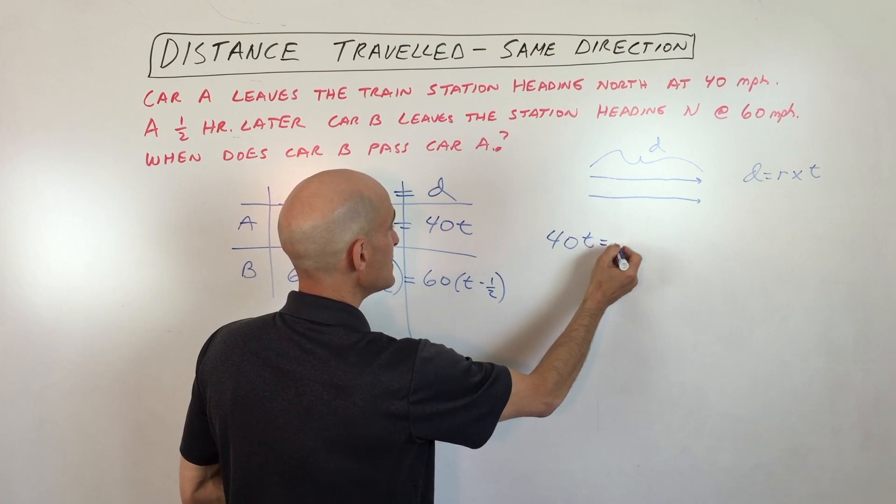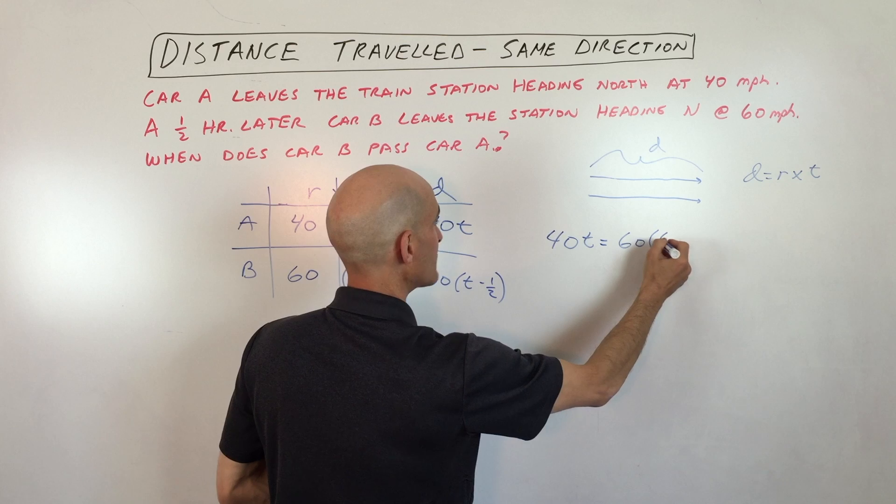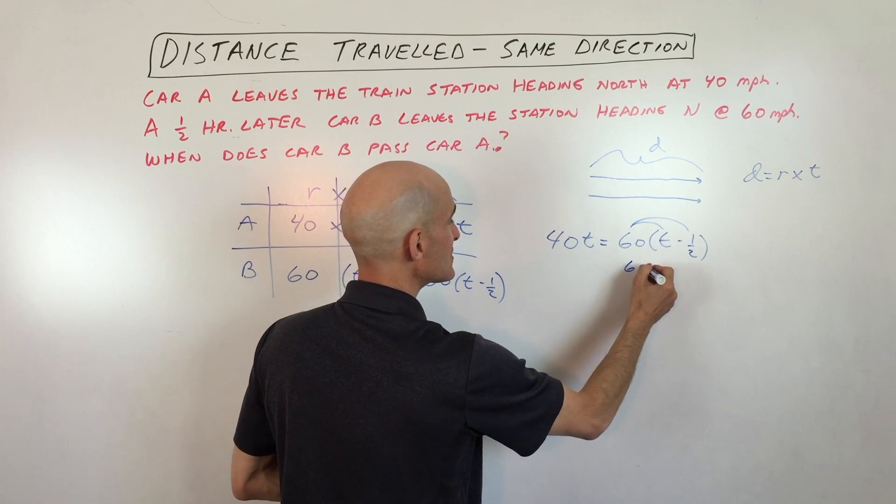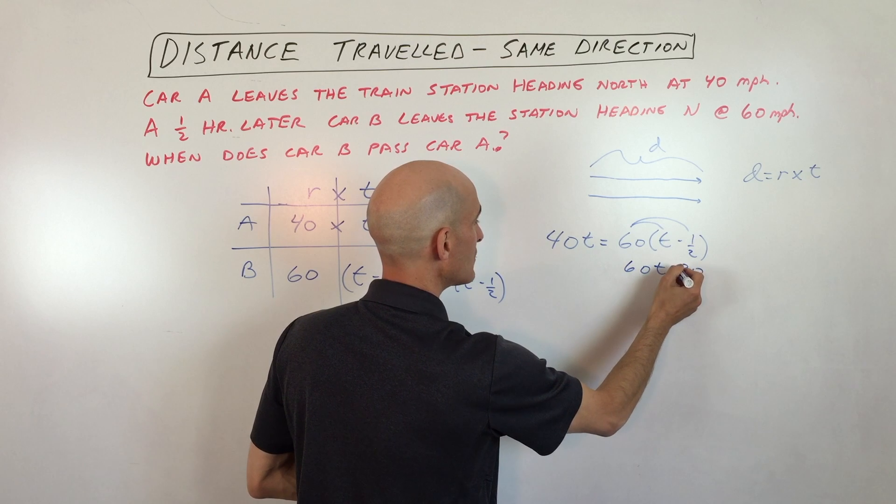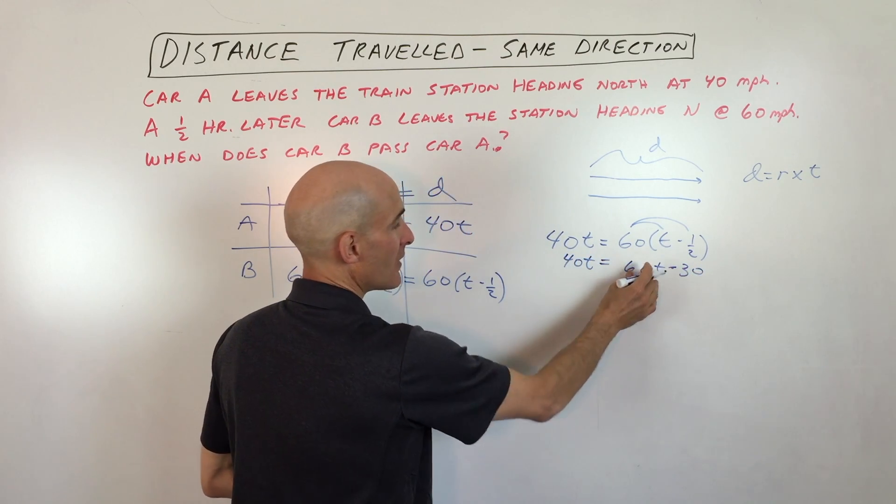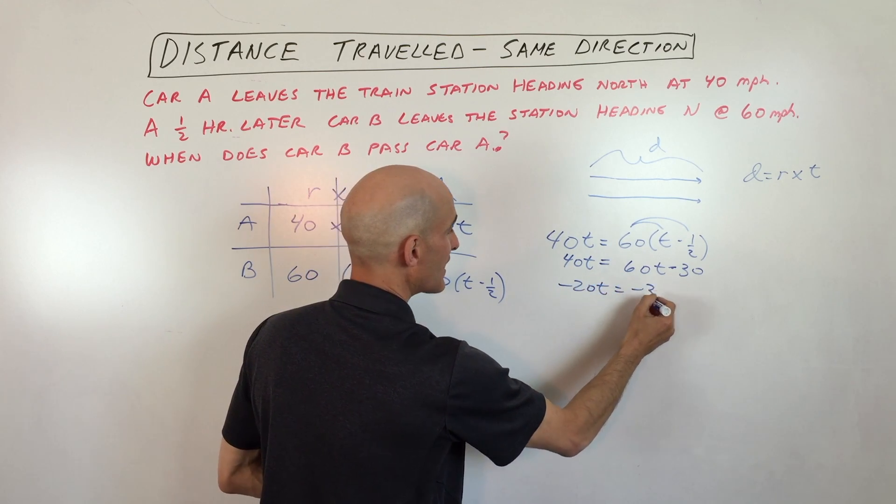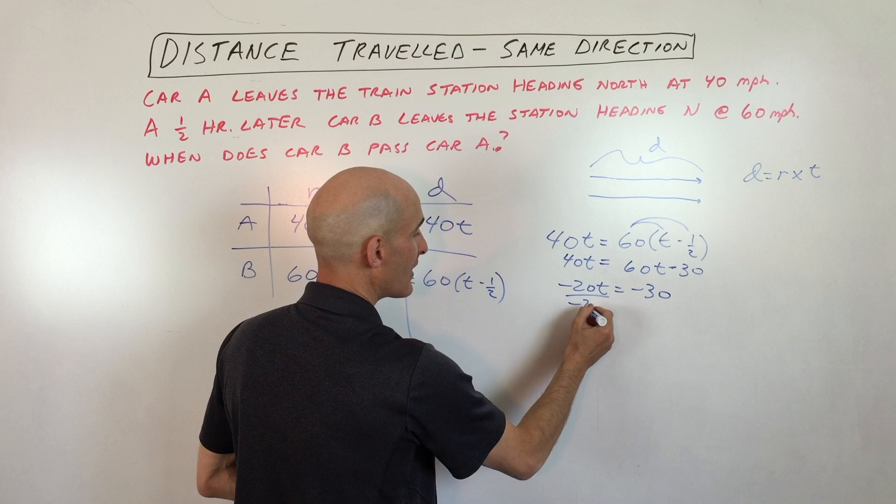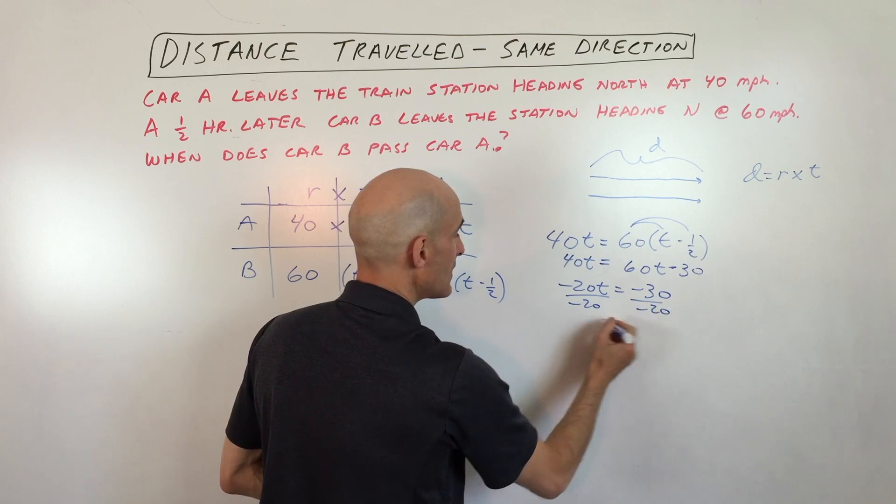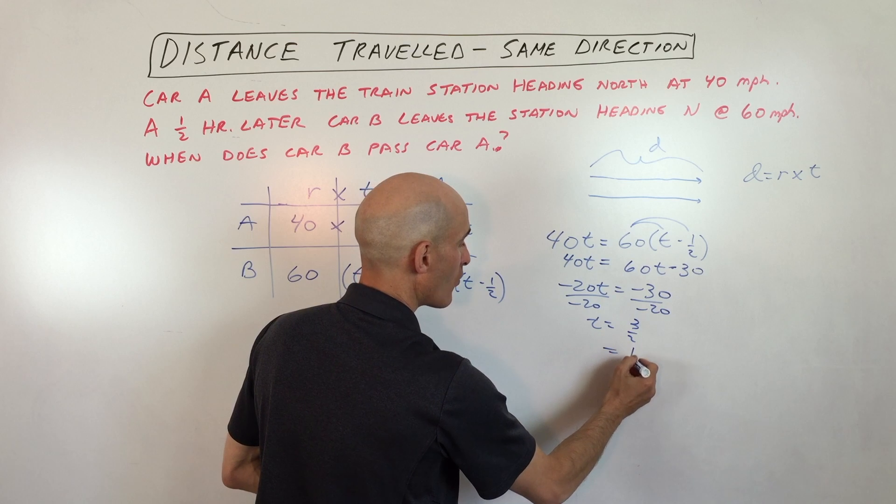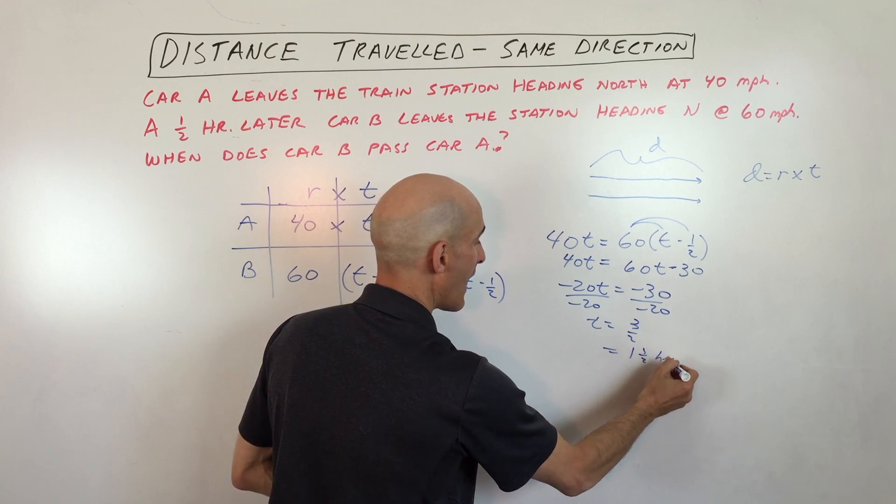So 40T equals 60 times T minus one half. I'm going to distribute the 60. So that gives you 60T minus 30 equals 40T. If I subtract the 60T, that gives me negative 20T equals negative 30. And if I divide by negative 20, T gives us three halves, which is basically one and a half hours.